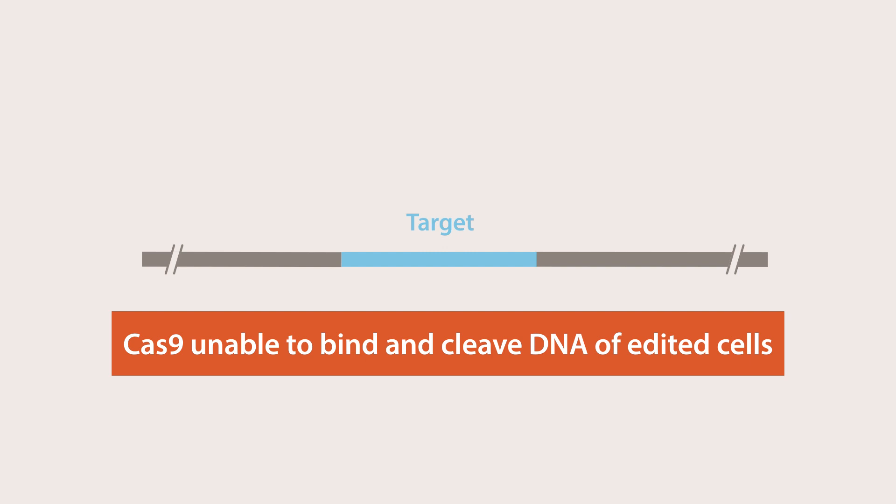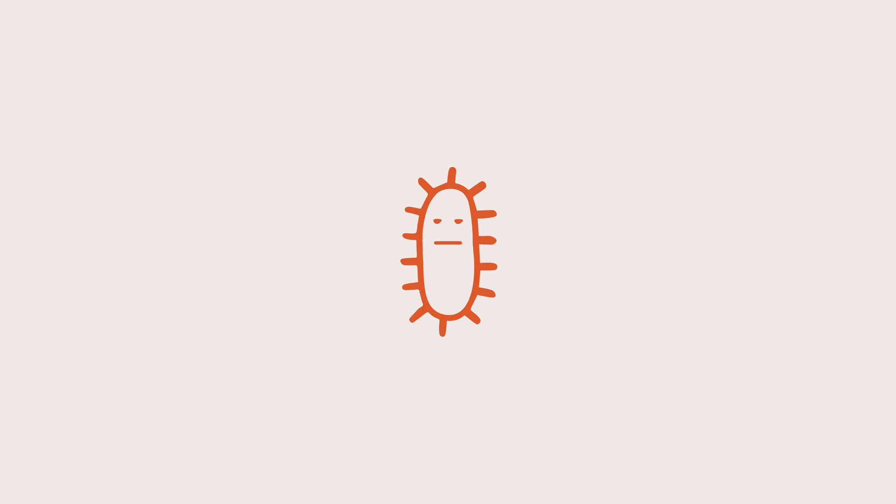In this way, CRISPR-Cas9 is used to eliminate unedited cells, creating a highly precise and robust bacterial gene editing system.